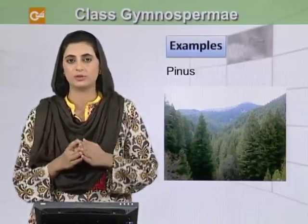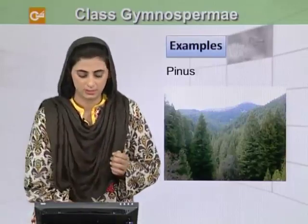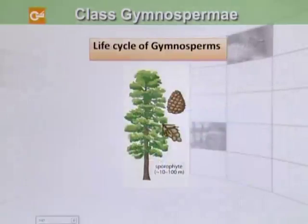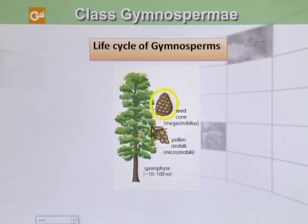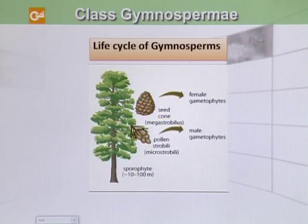Now we will look at the life cycle of Pinus. This is a sporophyte of a Pinus plant, and it comprises pollen strobili, also called micro strobili, and a seed cone, also known as mega strobili. The mega strobili forms the female gametophyte, while the pollen strobili or micro strobili forms the male gametophyte.